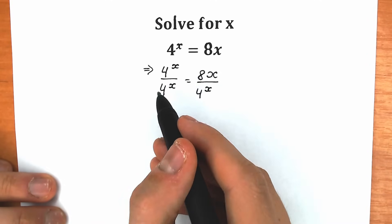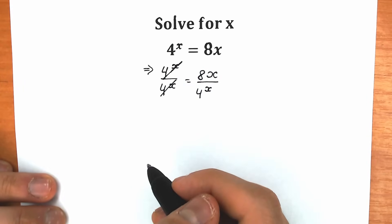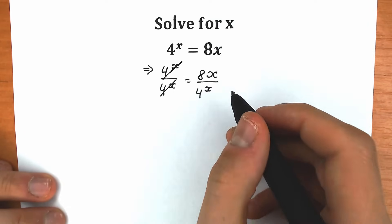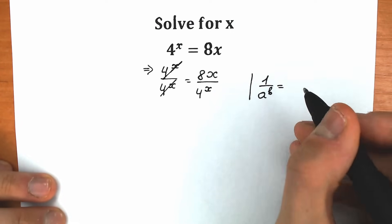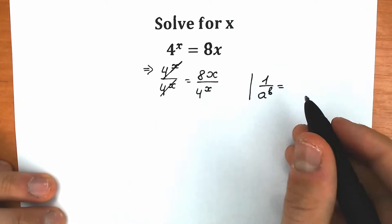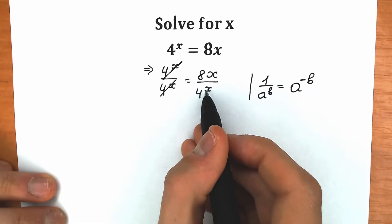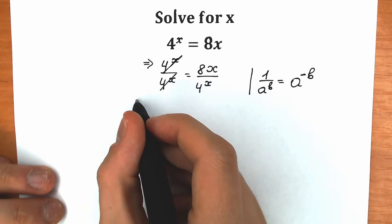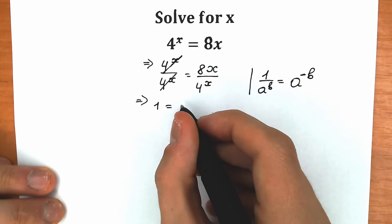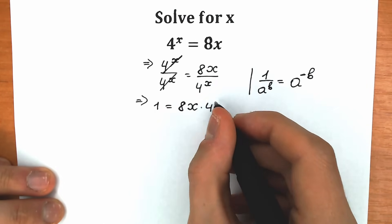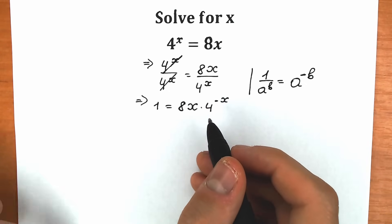On the left side, we can easily cancel the 4 to the x, because we have absolutely the same numerator and denominator, so we have 1 on the left side. On the right side, using the property that 1 over a to the power b equals a to the power minus b, we bring 4 to the x to the numerator and change the sign. So we have 1 equal to 8x times 4 to the power minus x.